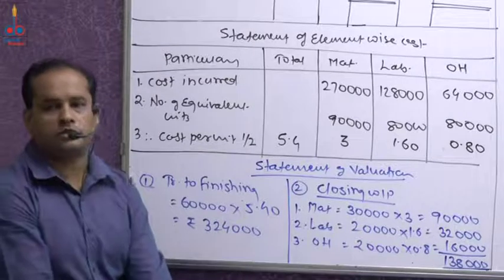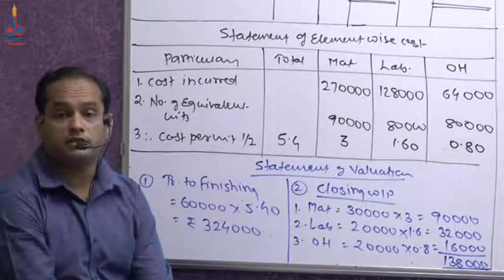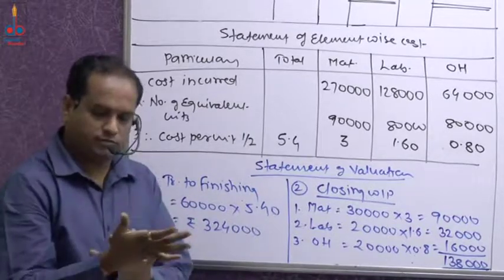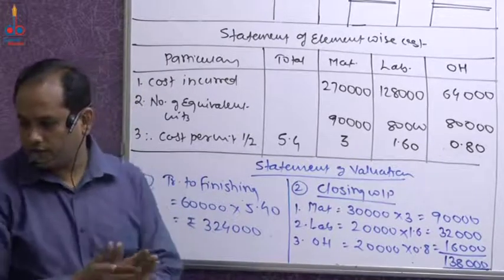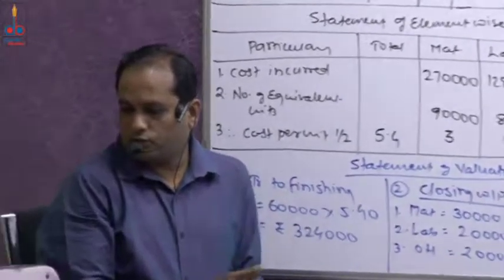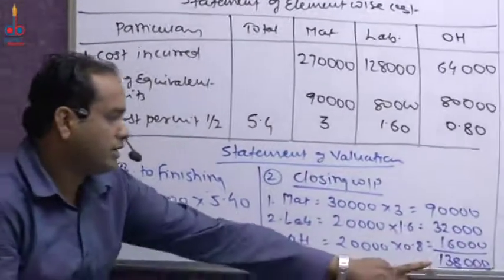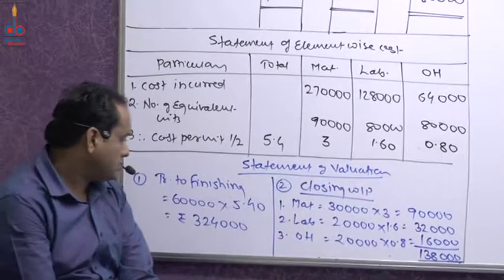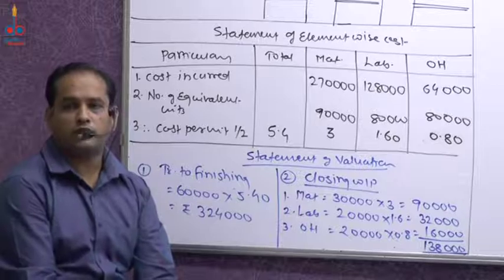Now prepare the Process Account for machining. Debit side: Materials 2,70,000; Wages 1,28,000; Overheads 64,000. Credit side: By Finishing Process 3,24,000; By Balance Carried Down (closing WIP) 1,38,000. Total: 3,24,000 + 1,38,000 = 4,62,000. Both sides balance at 4,62,000.